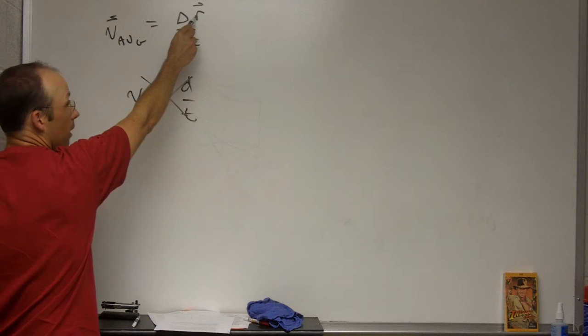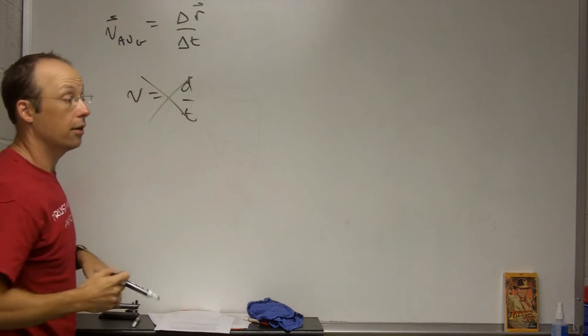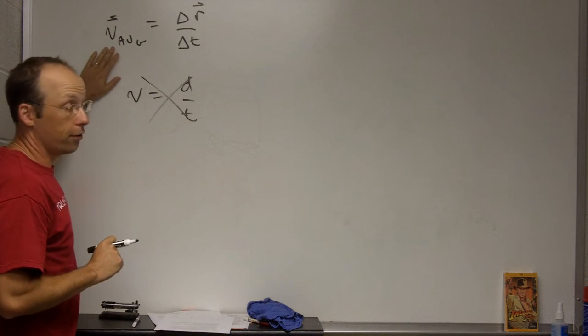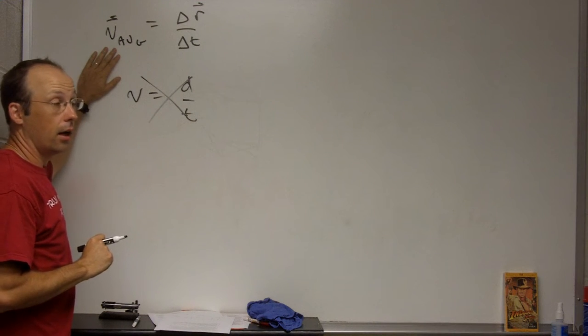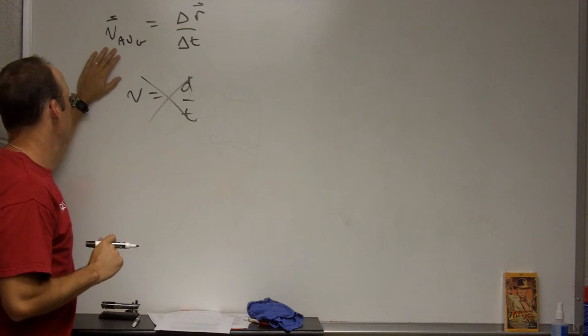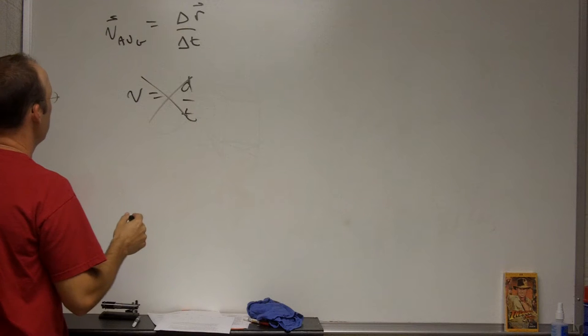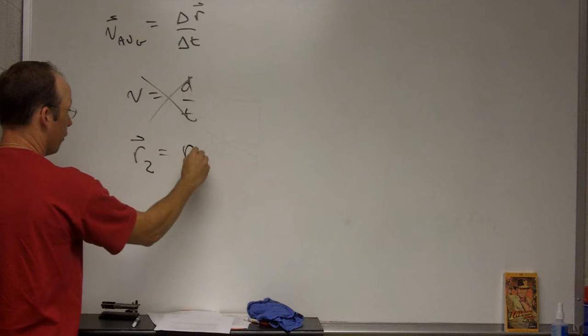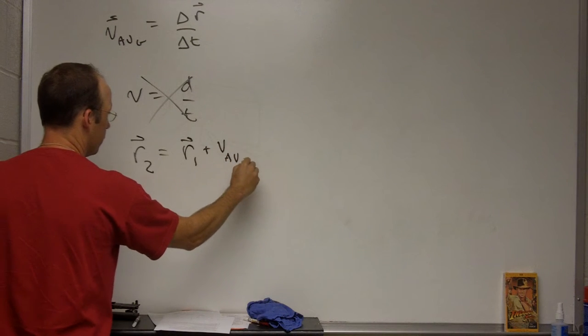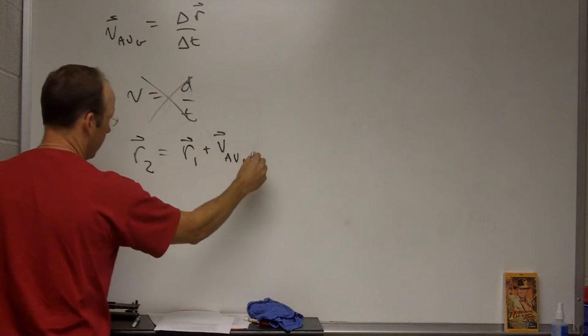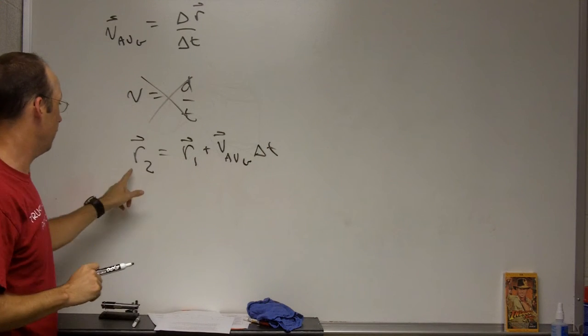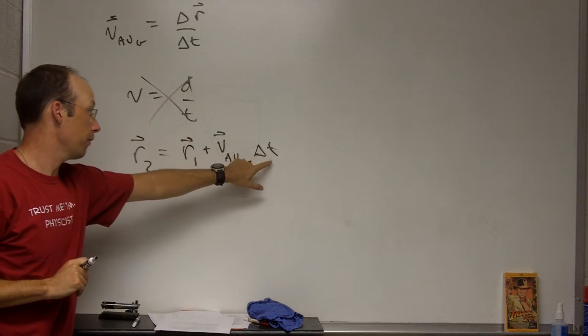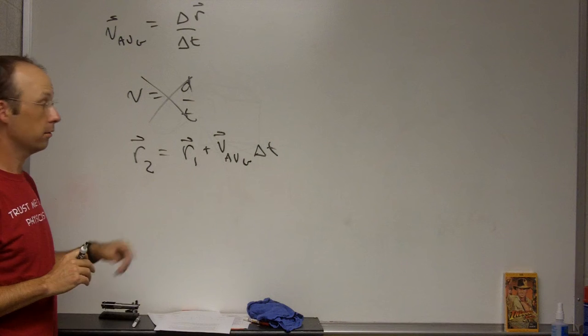Also, V is a vector and the position is a vector and the change in position is a vector. So these are all vector quantities. From this we also get the very important position update formula. So if the velocity is constant, then I could say R2, just by solving this, equals R1 plus V average or just V delta T. That's the position update formula. If I know where it was and I know the velocity, I multiply the velocity by the time interval and I can find the new position.